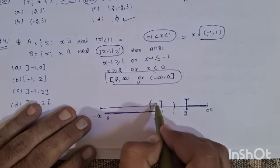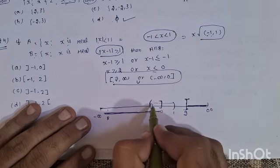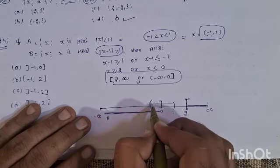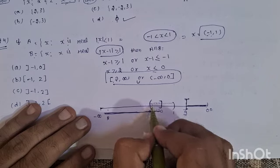This is Set B and this is Set A. The intersection A ∩ B is the common region.